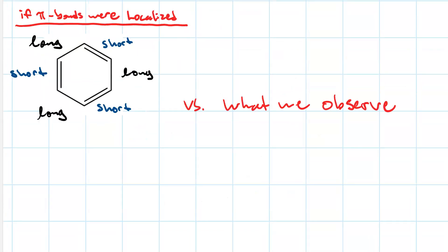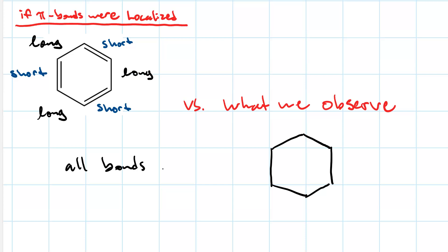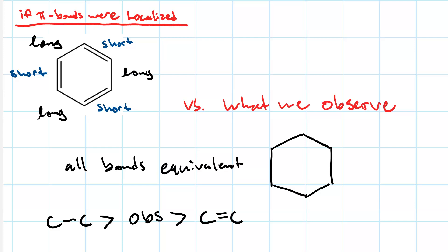What we actually observe with benzene is different. All six of the carbon-carbon bonds have identical lengths, and thus they're equivalent. What's more, a carbon-carbon single bond is longer than the observed bond length, which is in turn longer than a carbon-carbon double bond. This leads us to believe that these bonds are in between single and double.